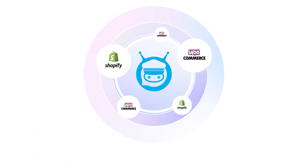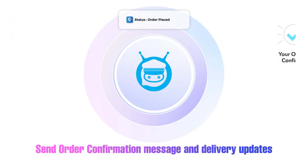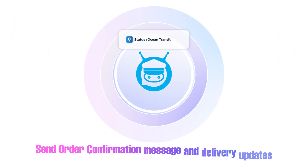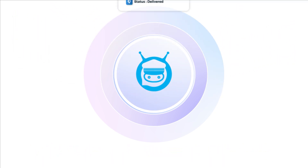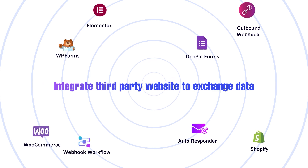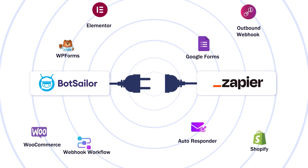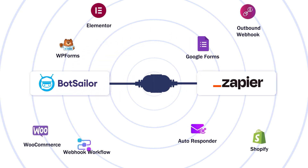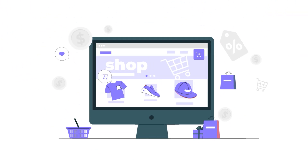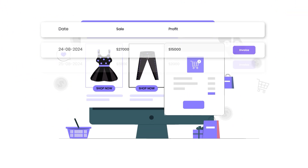Sending notifications like order confirmation, delivery updates, and many more can be fully automated now. You can connect BotSeller with any third-party website, including Zapier, to send and receive data, ensuring your e-commerce and business purposes are fully automated and integrated.